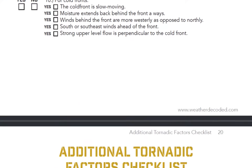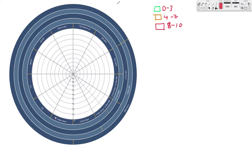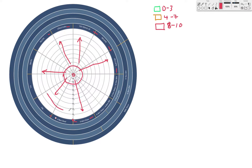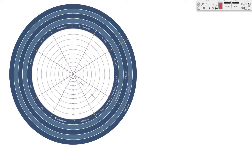Welcome to the marker board. This is the Wheel of Tor — a tool I've developed to assess tornado potential for specific locations. It features a wheel of ingredients that measures how each ingredient fits into the tornado potential. It goes on a scale from zero to ten. Ten is the highest potential and zero is the lowest. When you see a bunch of ingredients closer to ten, that means there's a much higher tornado potential for that specific location than if you were to see values near zero.